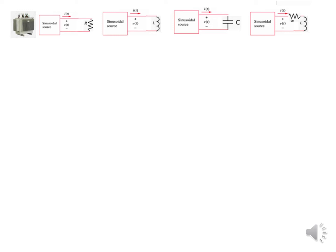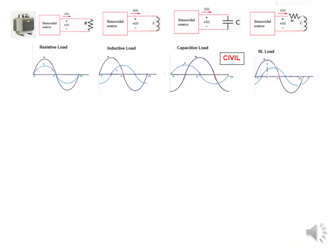The voltage and current relationship will vary depending on the load. For a pure resistive load, current and voltage are in phase. Some people use the mnemonic CIVIL to remember: for a capacitor, current I is before voltage V — I is leading. For an inductor, voltage is before current — current is lagging.